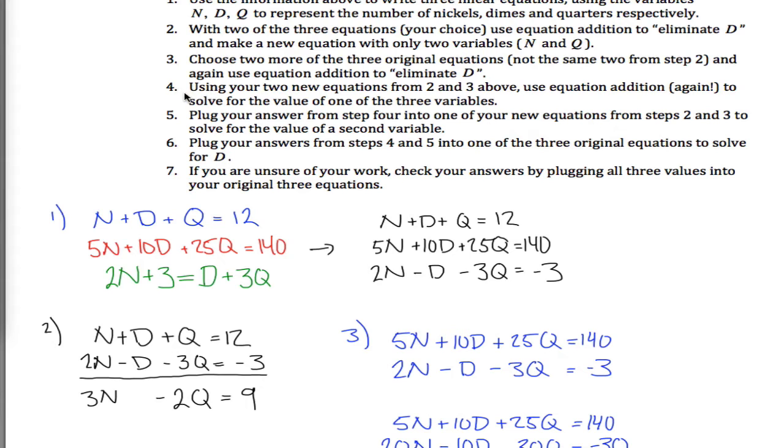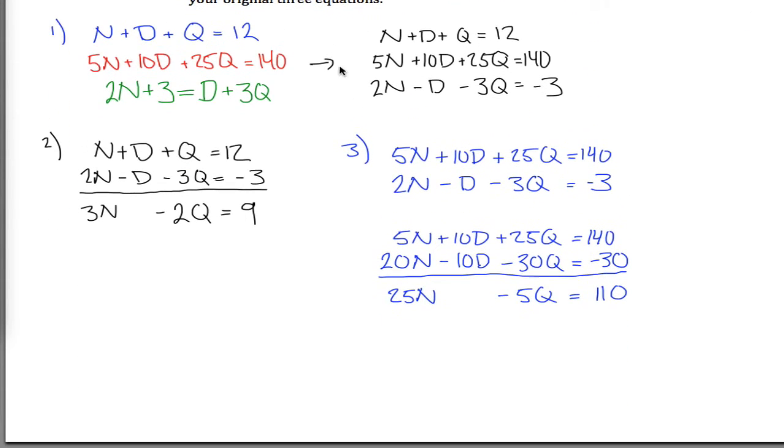So step 4, what it wants me to do is use the answers to step 2 and 3 above. Okay, I can do that. Step 4, I've got 3N minus 2Q equals 9, and 25N minus 5Q is equal to 110.